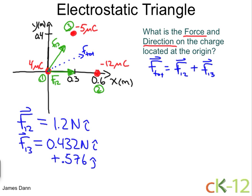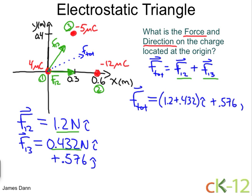So when we add these two vectors, F1,2 to F1,3, we need to add the x to the x and then the y to the y. Now there is no y component for F1,2, so we already know the answer there. It's just the 0.576. So let's write this out. Ftotal is equal to 1.2 plus 0.432 in the x-direction and then in the y-direction it's 0.576. And adding these up, we get 1.632 Newtons in the x-direction plus 0.576 Newtons in the y-direction.